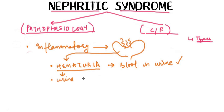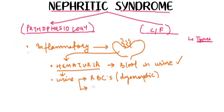Since hematuria is taking place, in the urine there will be RBCs, but these RBCs will be dysmorphic — that is, their shape will not be normal. Also in the urine we will find RBC casts. So the main urine findings in nephritic syndrome are hematuria, dysmorphic RBCs, and RBC casts.